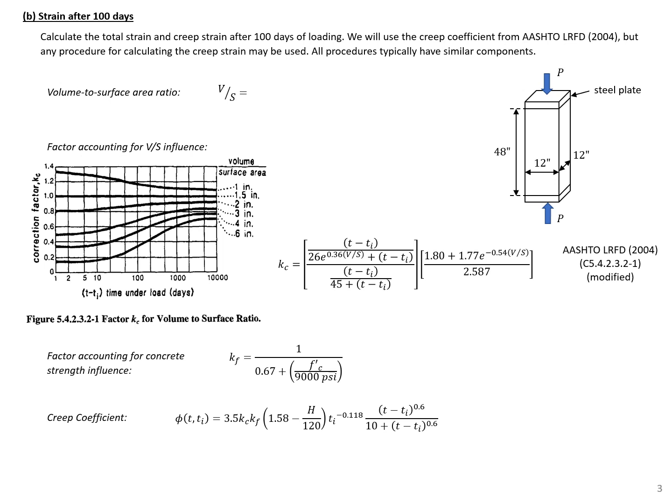Next, we're finding the strain after 100 days, which means we're including the effects of creep — this will be the total strain including creep after 100 days. The first thing we need to do is find a creep coefficient. We can use any procedure we'd like. In this example, I'm going to use AASHTO LRFD 2004. Most procedures will have a few different terms, the first of which accounts for the geometry of the specimen using the volume-to-surface-area ratio.